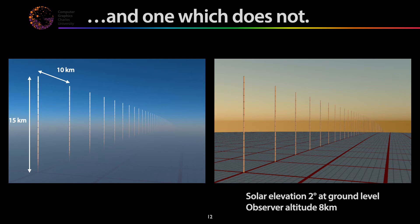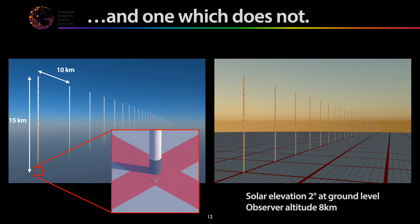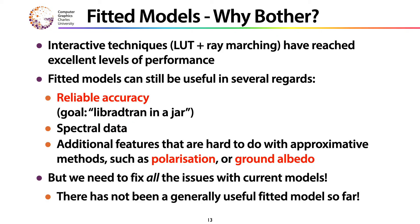To give a further indication of scale, that's an Airbus A380 at the bottom of one of those pillars. So, fitted models — given that the interactive models are so good, why would you bother? Well, because for some cases you still need accuracy. You want Libratran, which is also far too slow for production use. You want Libratran in a jar, including all those effects you sometimes need — polarization, ground albedo, and so on — which would be hard to do with lookup table and ray-marching approaches.